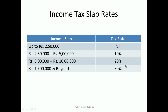First of all, the things you need to know are the various income tax slab rates. For people who earn less than two lakh fifty thousand rupees, there is no tax. For income between two lakh fifty thousand to five lakhs, the tax rate is ten percent. For five lakhs to ten lakhs, it is twenty percent. For income more than ten lakhs, it is thirty percent.